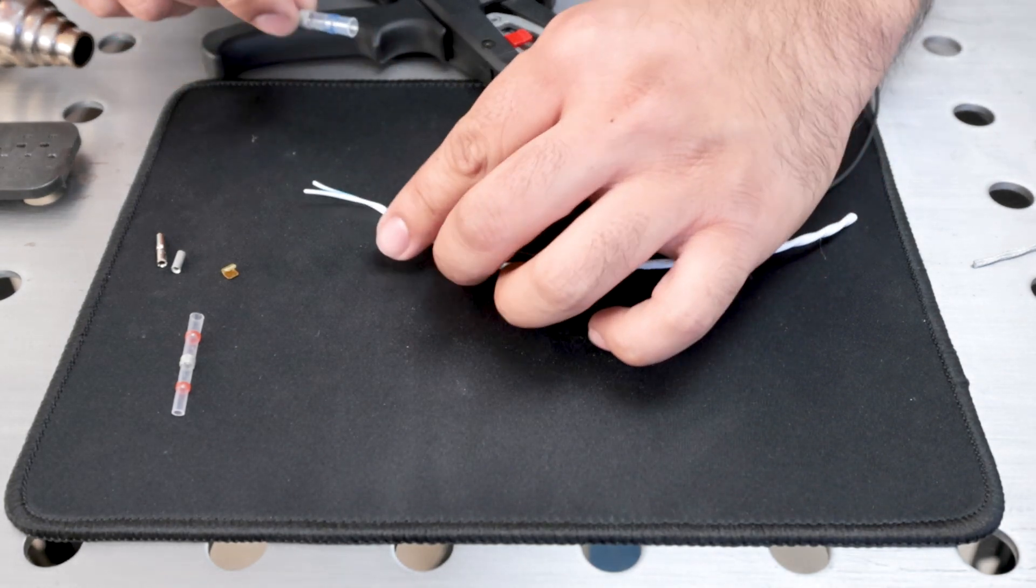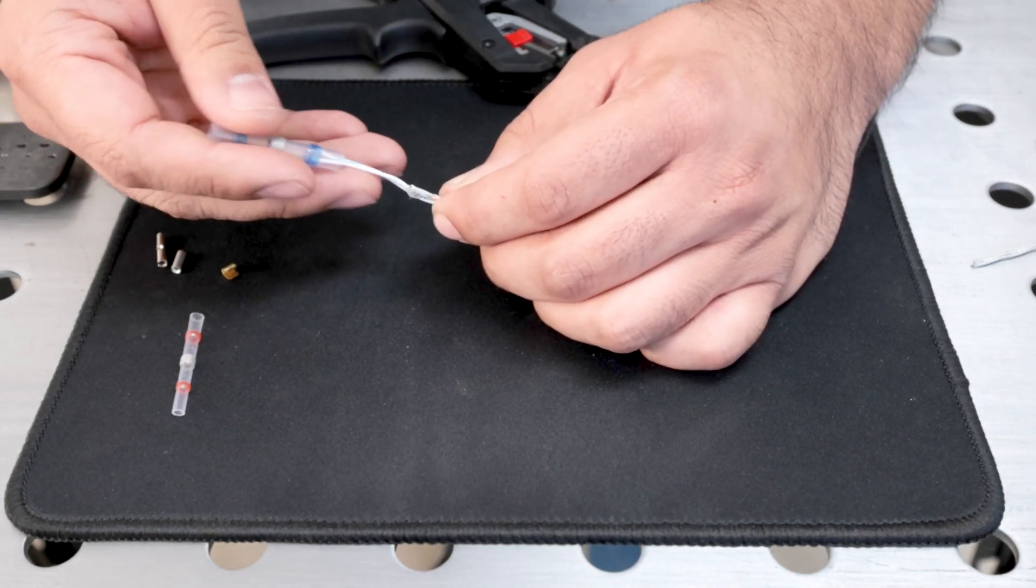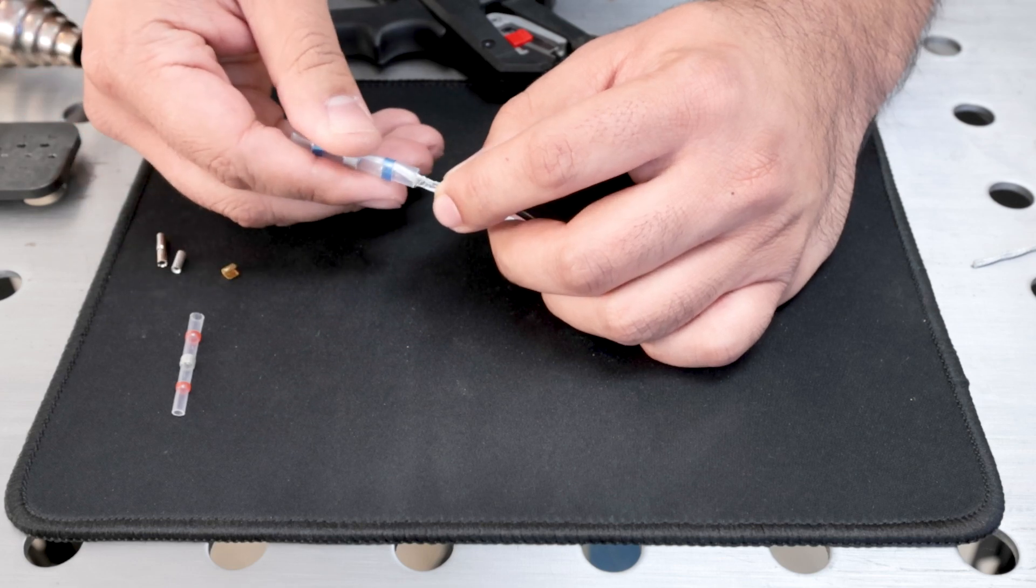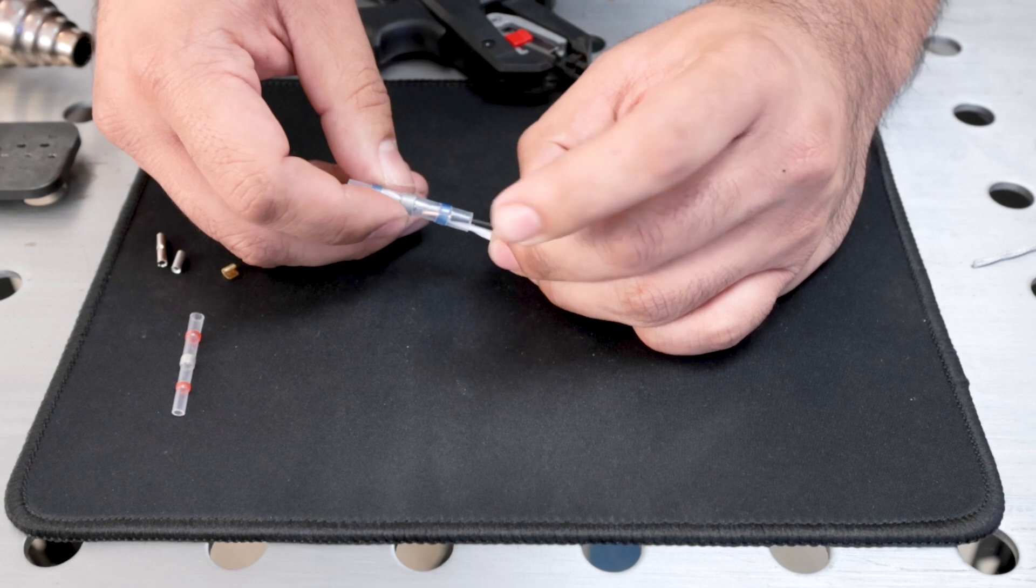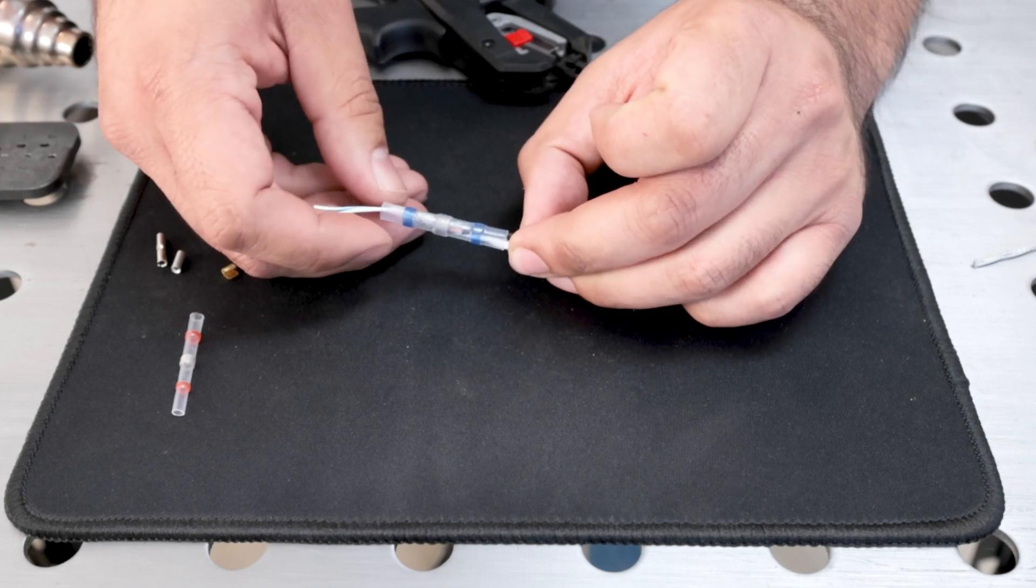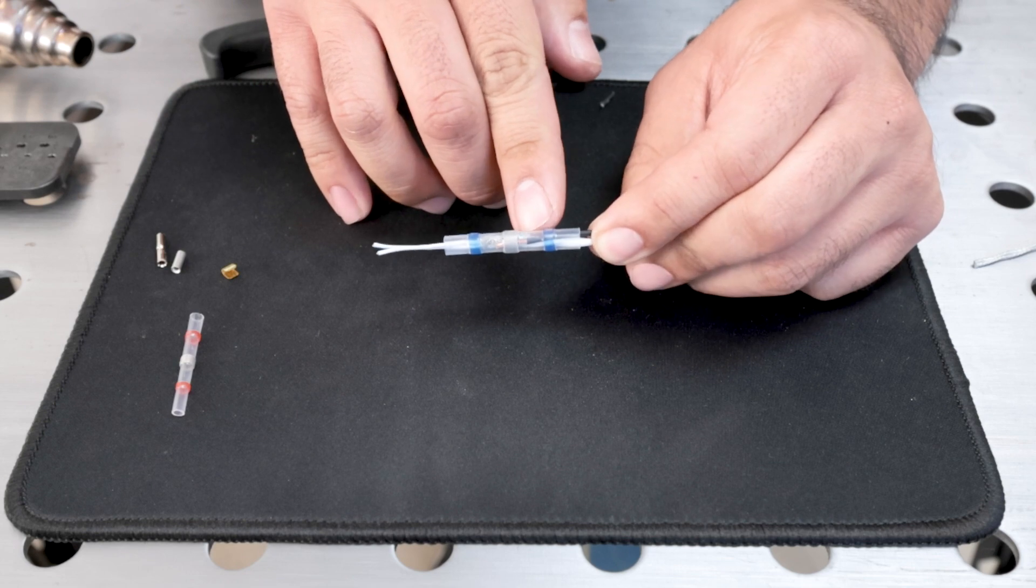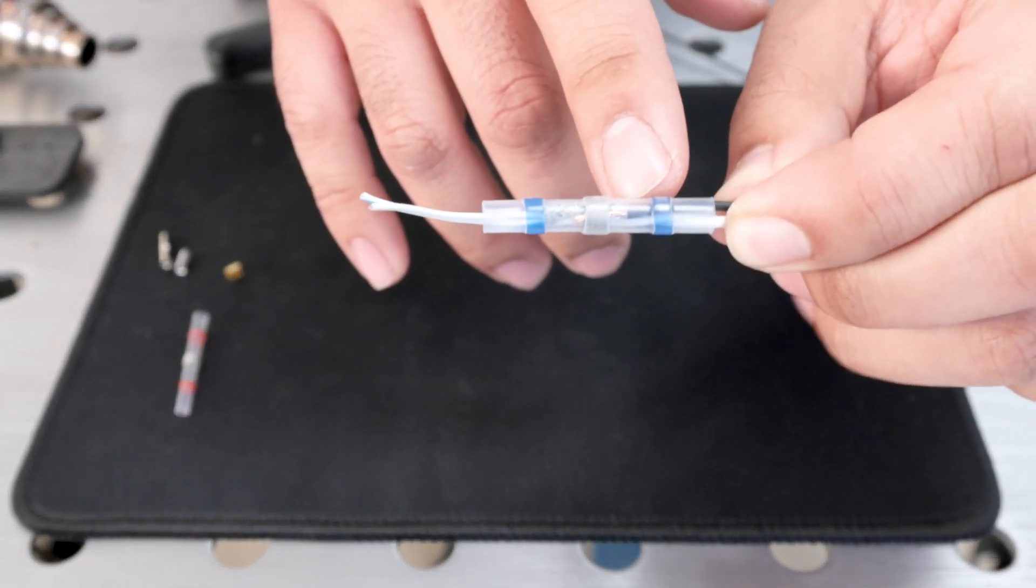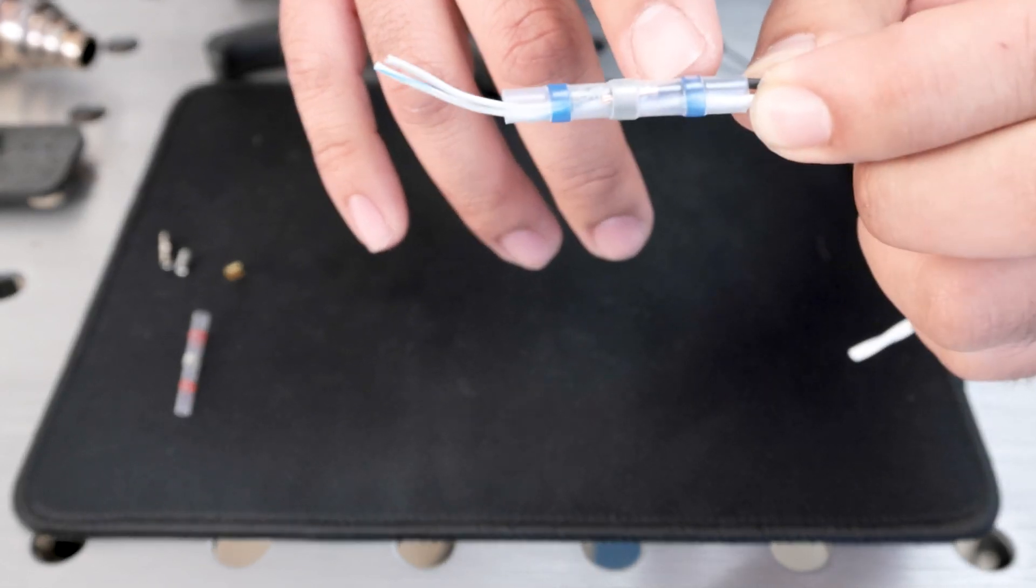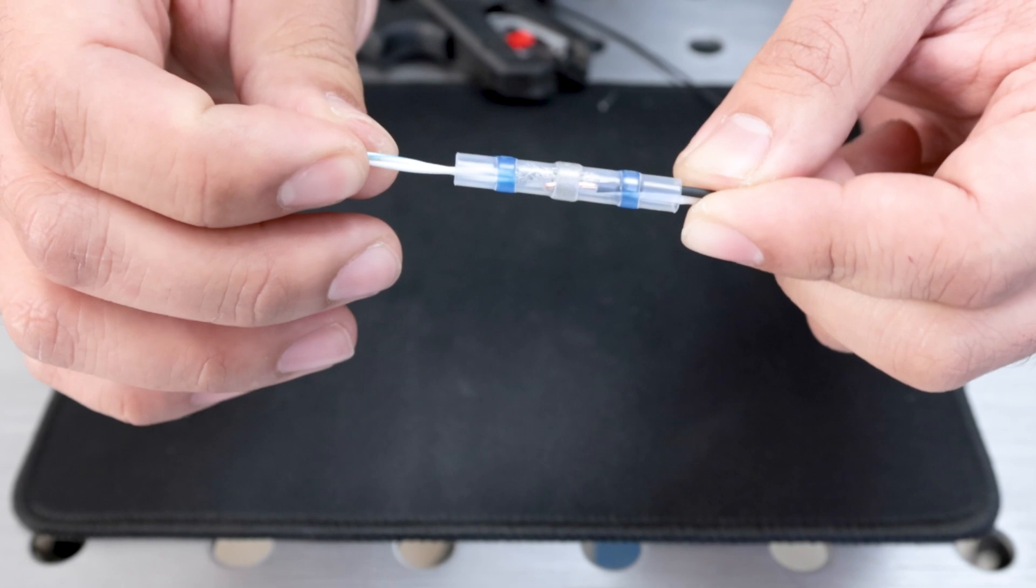Now we're going to put it all together. And you can see you have the copper here. You have the copper from the conductor for your drain wire. You have your braid from the shield and then you have your conductors from the core.